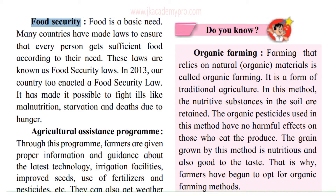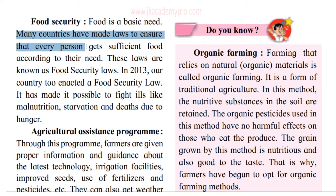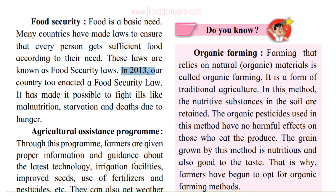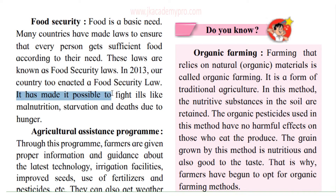Food security — what does that mean? Food is our basic need; everybody requires food and without food we cannot live. Many countries have made laws — that is, rules — to ensure that every person gets sufficient food according to their need. These laws are known as food security laws. In 2013, our country India too enacted a food security law, and it has helped fight ills like malnutrition, starvation, and deaths due to hunger.